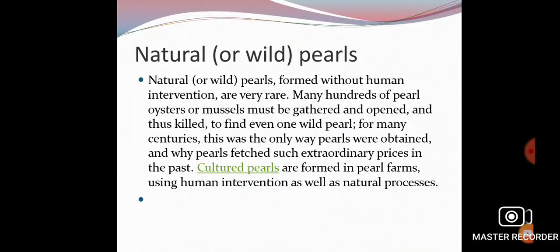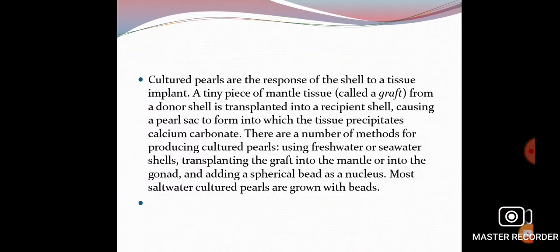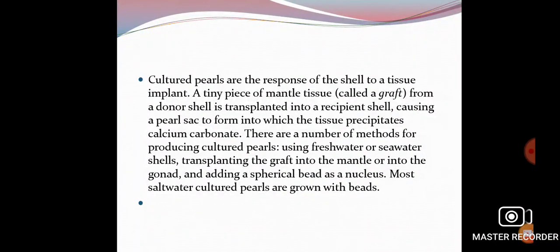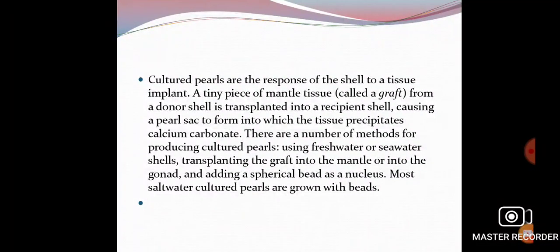The second type of pearl is called cultured pearl. Cultured pearls are the response of the shell to a tissue implant. In natural pearl formation, if any shell or mantle material naturally adheres or any parasite naturally attacks, the oyster secretes the nacre layer. But in cultured pearl, shell particles or sand particles are artificially implanted into the oyster's body inside the shell.